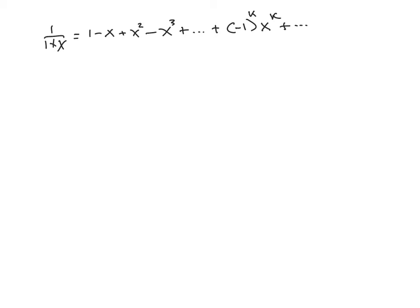Now, to get from here to the power series or the polynomial function for 1 plus x, just integrate both sides. And to get the generic term, just integrate the generic term. So, negative 1 to the k, x to the k plus 1, over k plus 1.